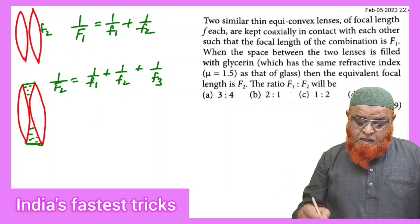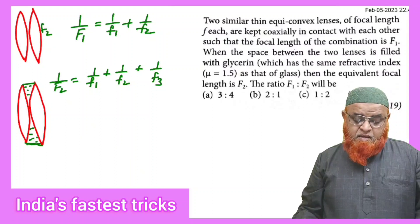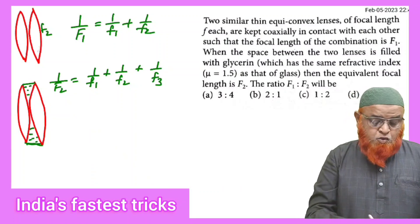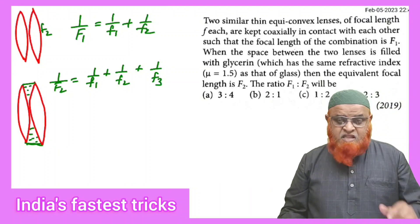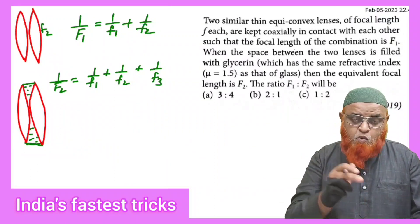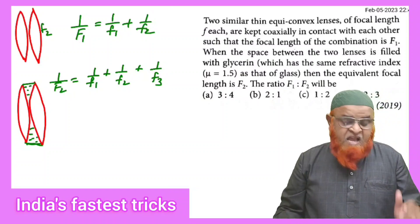Now if you observe here, there is a problem where you can consider that there are two equi-convex lenses having focal length f1 and f2. Therefore, resultant focal length 1/F1 is equal to 1/f1 plus 1/f2.